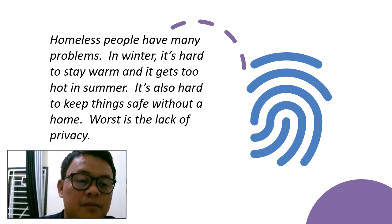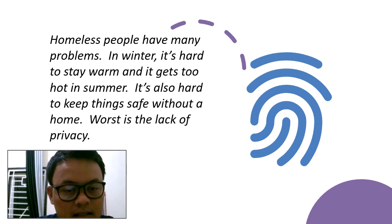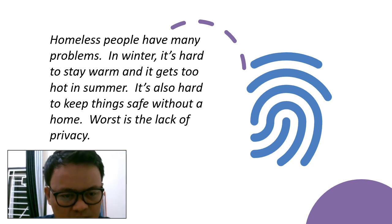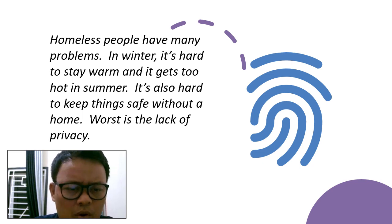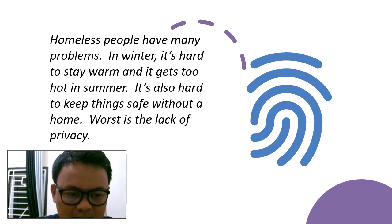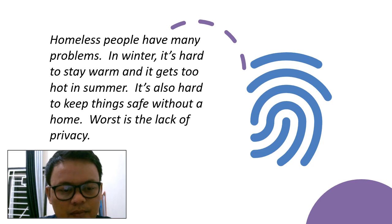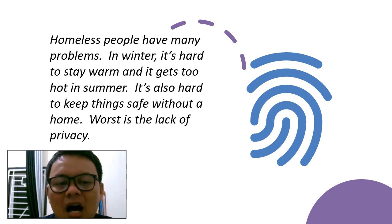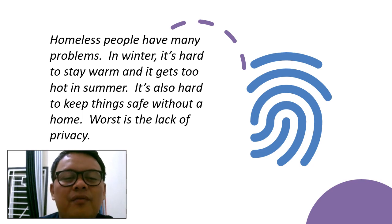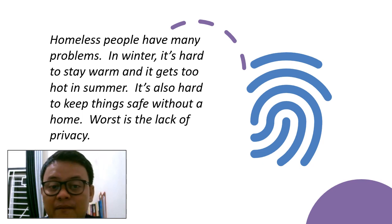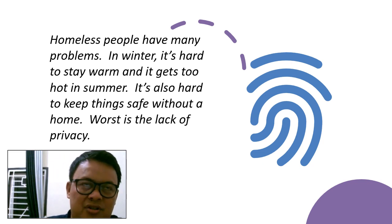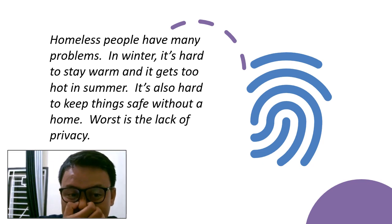How about this second example: 'Homeless people have many problems in winter. It's hard to stay warm. In summer, it's hard to keep things safe without a home. Worse is the lack of privacy.' You may write it down first and then come back. The main idea is 'homeless people have many problems.' The other sentences are just samples of their problems — supporting evidence that strengthens the main idea.